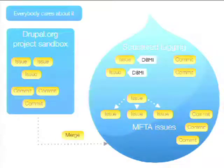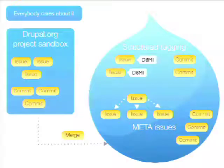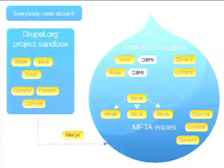There are good things in all three approaches. For D8MI, structure tagging worked really well. I think for the scale of changes required for CMI and Whiskey, they could not do that process in any way. For smaller changes, issues work very well. For bigger changes, you need to have those discussions and likely a sandbox to work on.